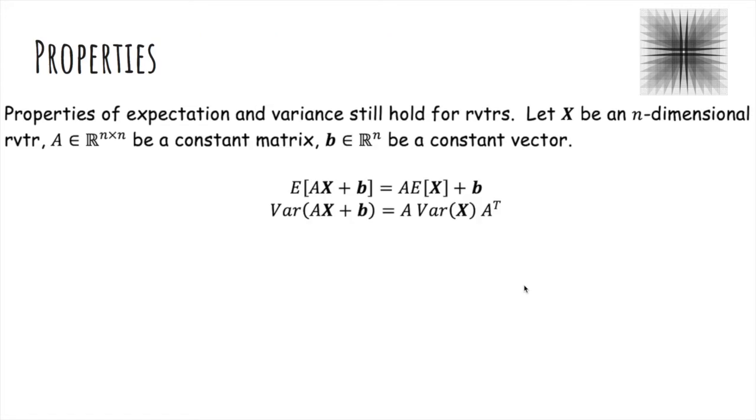So properties of expectation and variance also hold for random vectors. You'll notice that if X is a random vector and a and b are constants, it preserves the linearity of expectation. Also, this variance of aX plus b kind of looks like a squared variance of X.